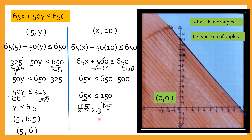So ang hirap naman ng 2.3 pag bumili tayo, di ba? Ang hirap nang i-identify nung 0.3 na yan. So usually ang binibili natin ay kalahati, 1/4, 3/4, something like that. But pag digital naman ang ginagamit nilang weigh scale, pwede-pwede pa rin bumili ng ganyan.